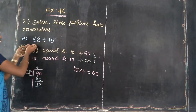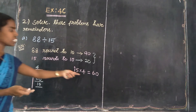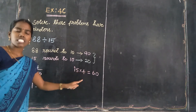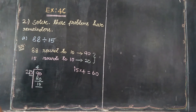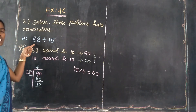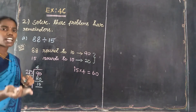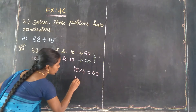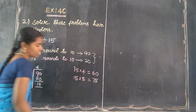Listen students: the original dividend value is 88 and this product is 60. Compare these 2 values. The dividend 88 is the highest value and 60 is the lower value. So do we increase or decrease? We increase. So 4 times gives 60. Next, 5 times: 15 into 5 — 5 fives are 25, carry 2; 1 five plus 2 is 75. Is 75 possible? No, because the dividend is 88.